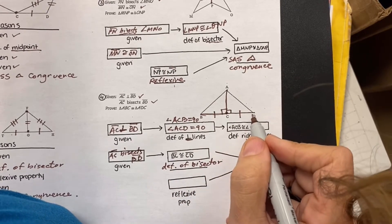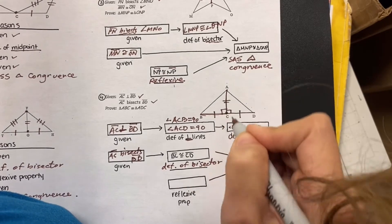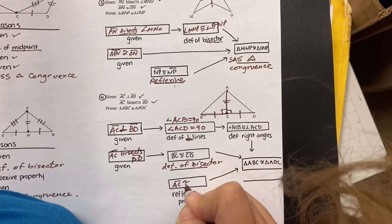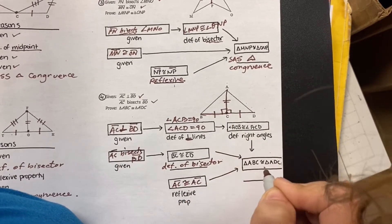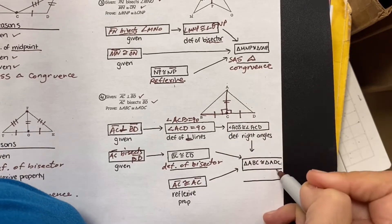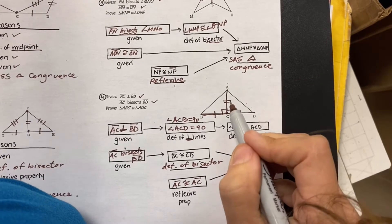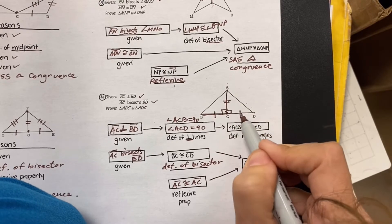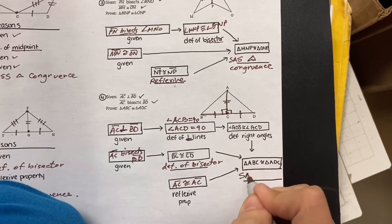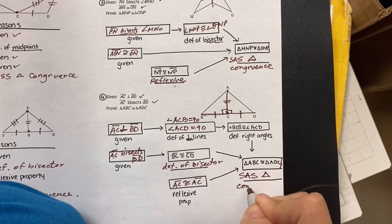Now they said there's a reflexive in here — AC is congruent to AC. So now what does my evidence spell for my congruent statement? Side, angle, side — side, angle, side triangle congruence.